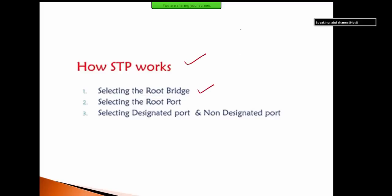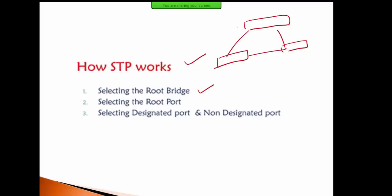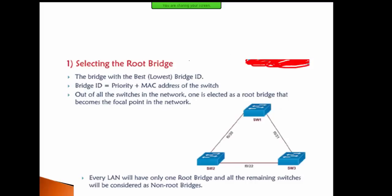First of all, the root bridge is selected. There are three switches I am going to look at. First, what is the root bridge? The root bridge selects first, then the root port. The root bridge is determined by the lower bridge ID. Lower bridge ID equals priority plus MAC address.